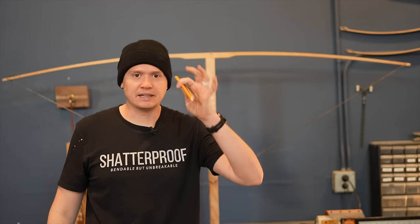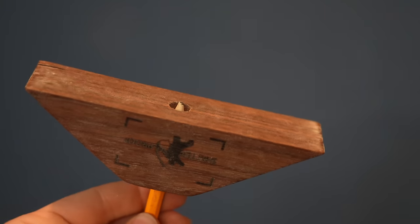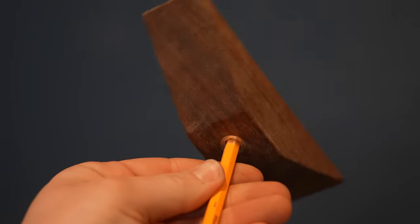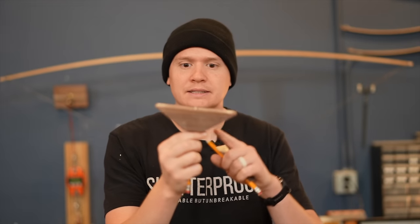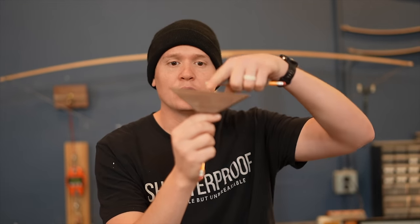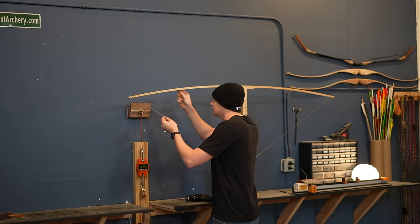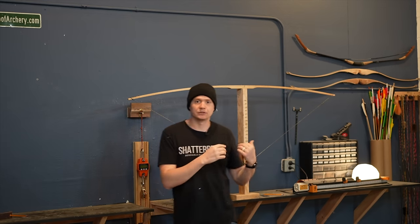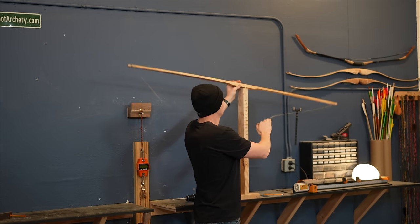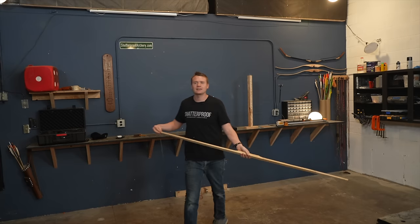There is a tool that does this for you and is 100% accurate. That's called a tillering gizmo. These are at Shatterproof Archery, or you can check out a video where I teach you how to make these as well. What a gizmo has done is combine the straight edge with the pencil coming through so it automatically marks where you need to remove wood. Now that my locations are marked where I need to remove wood, we'll take it off the tillering tree and we'll go remove wood in those areas.